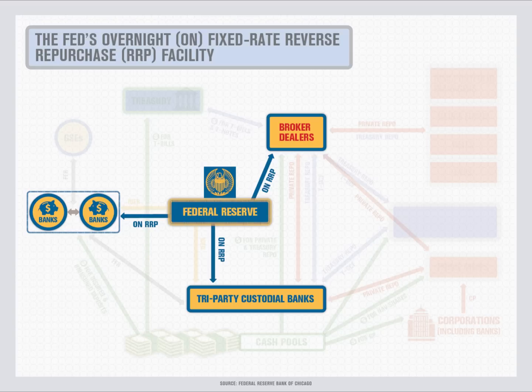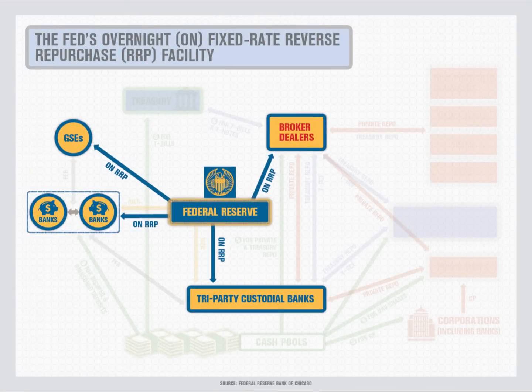Importantly, this allows the Fed to provide a safe overnight investment to participants that cannot earn interest on excess reserves, effectively expanding the set of investors unwilling to lend at rates below those offered by the Fed. In a reverse repo, the Fed sells government securities and borrows reserves from eligible counterparties overnight at a fixed rate known as the overnight reverse repo rate, which is set by the Fed. Included among the non-bank counterparties eligible to participate in reverse repos with the Fed are the GSEs.